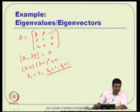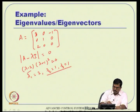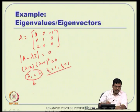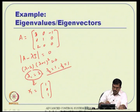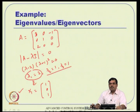For lambda_1 = 2, the calculation is straightforward and the eigenvector turns out to be x1 = [1, 0, 1].